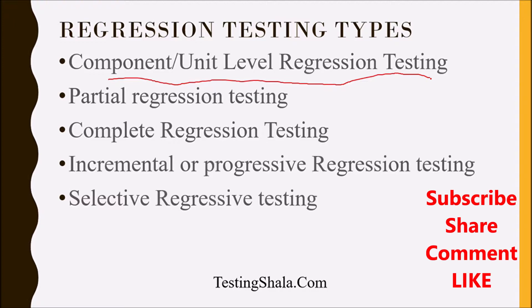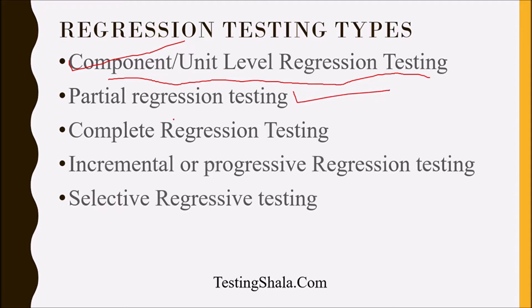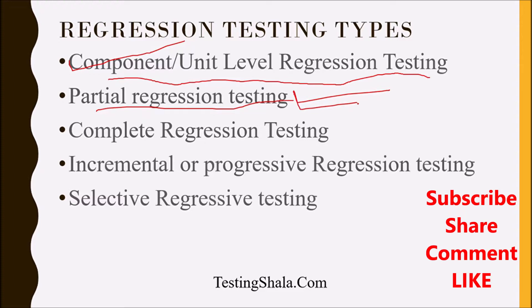The second type is partial regression testing. Partial regression is done when new functionality is being added to the product, or when there are minor changes made to the existing code.